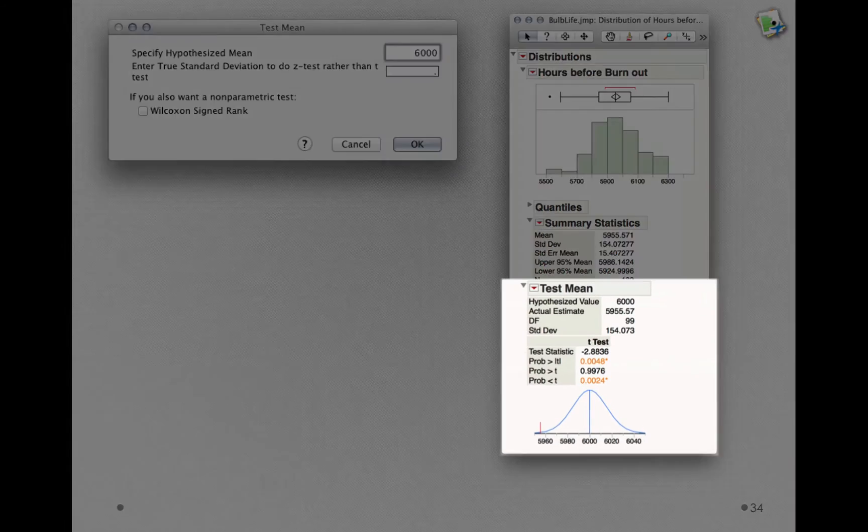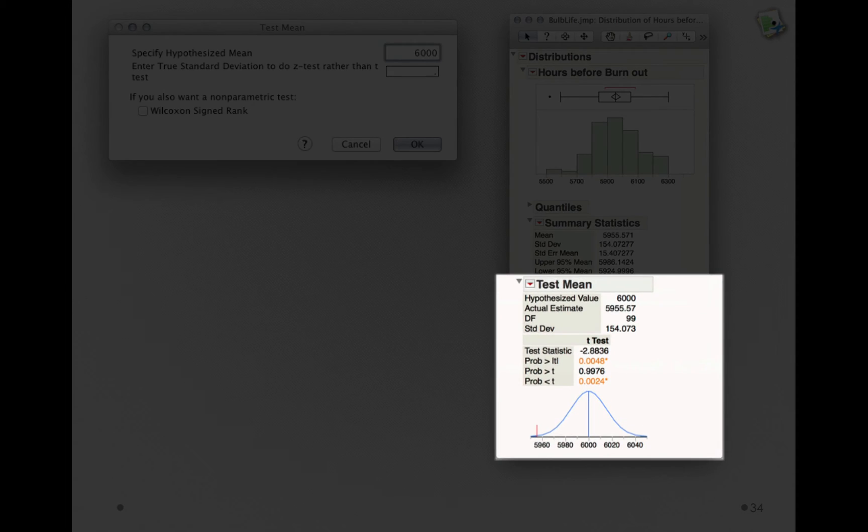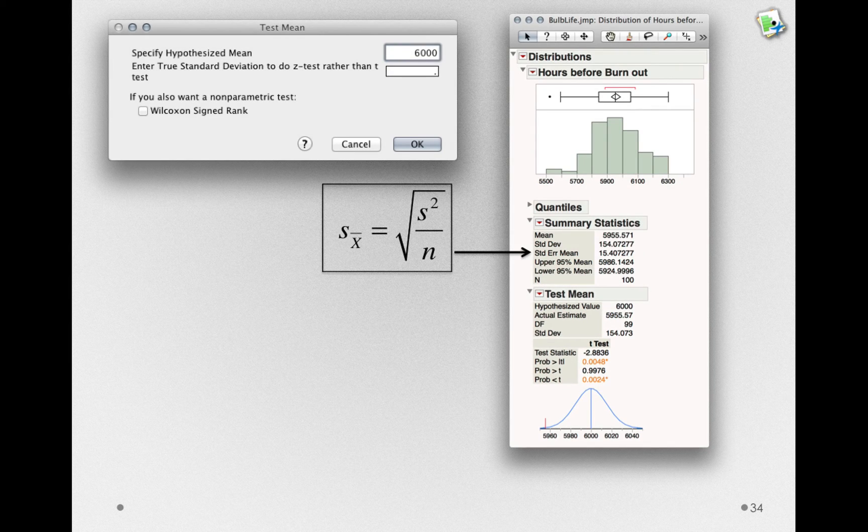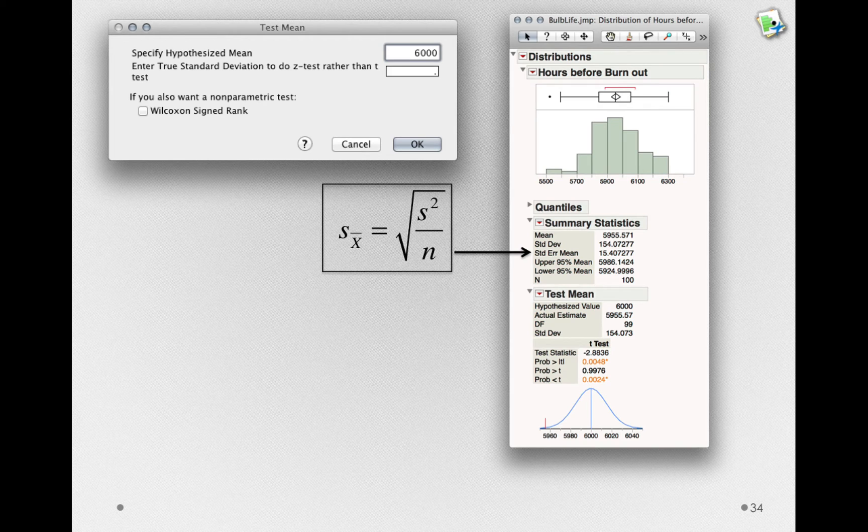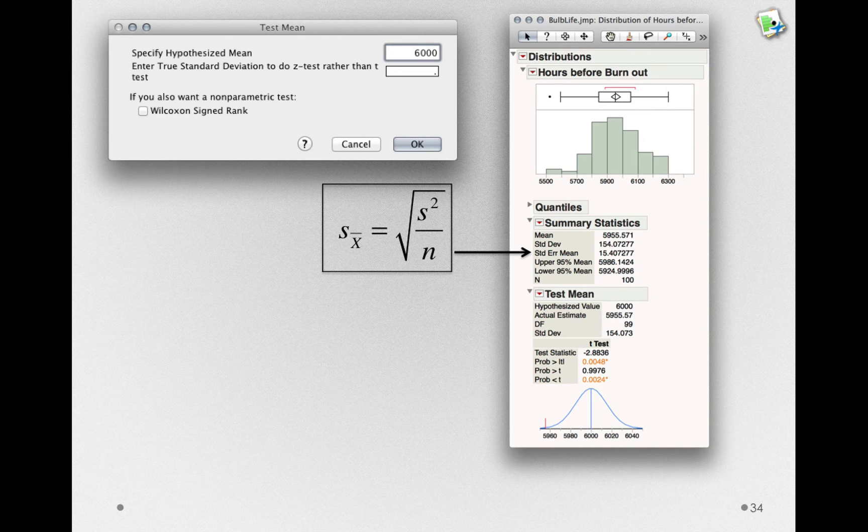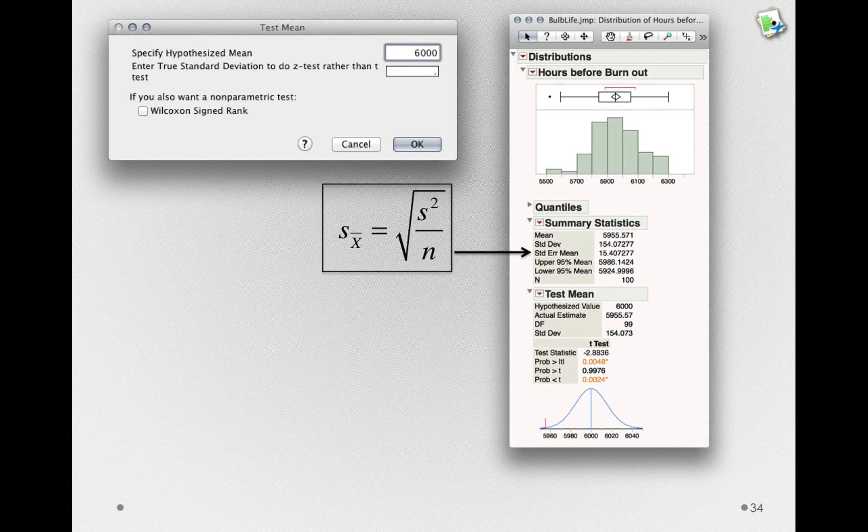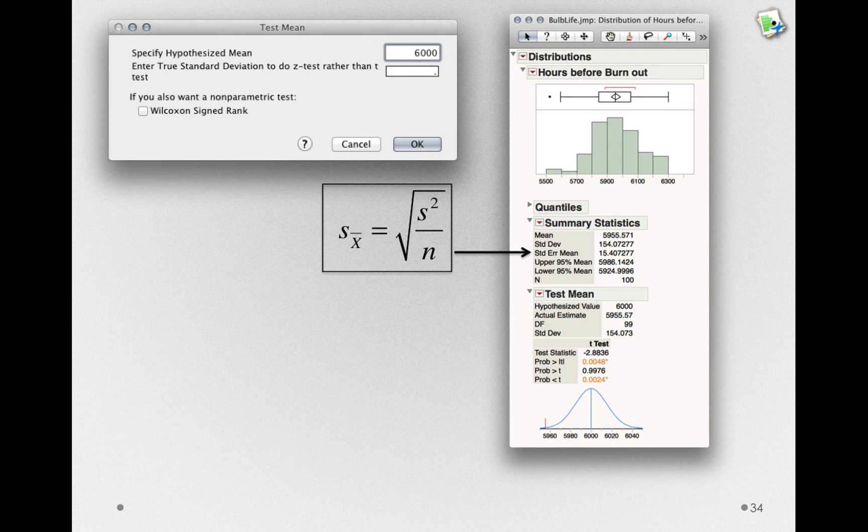When I click OK, JUMP will return the result showing us our p-values, test statistic, and our estimates. Let's step through each of these. First, we have the standard error of the mean. Remember, this is an estimated standard error. It's calculated using the square root of the population variance estimate, that is, s squared, divided by the sample size. We can also find this value by simply taking the standard deviation estimate divided by the square root of n.